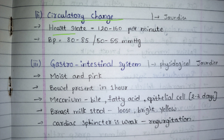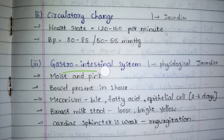The heart rate of a neonate will be around 120 to 160 per minute, and blood pressure will be around 80 to 85 over 50 to 55 mmHg — these are the normal values. If there is any problem in the circulatory system it may present as jaundice. Regarding the GI system, the baby's gastrointestinal lining is very moist, pink, and very sensitive.